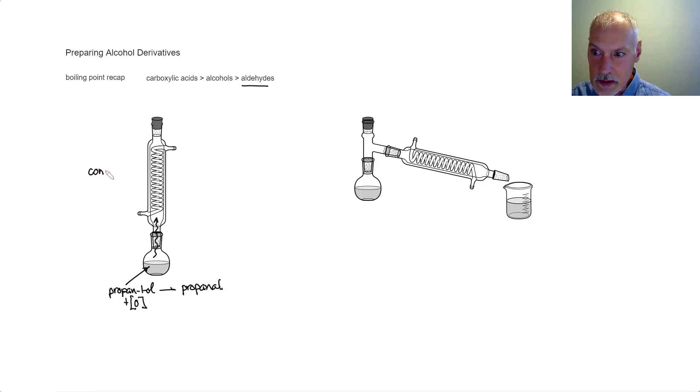A unit that's called a condenser. This condenser has water flowing through it, in particular cold water. This cold water is used to condense the vapor as it makes its way up, and therefore sends it back down into the container, where that propanal now meets the oxidizing agent that remained behind and can be further converted now into propanoic acid.